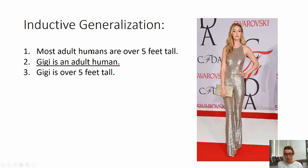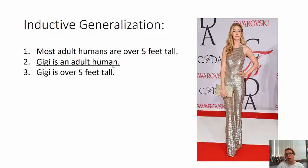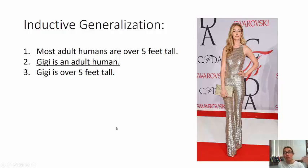Let me switch this up: most women are under six feet tall, and your professor Beth Secord is a woman. If this were a bet, you should put your money on me being under six feet tall because that's what the odds are — it's a good guess I'd be part of the majority. But I am an outlier: I am six feet and a quarter inch. So an inductive argument's conclusion could be wrong even though you were justified in believing it.